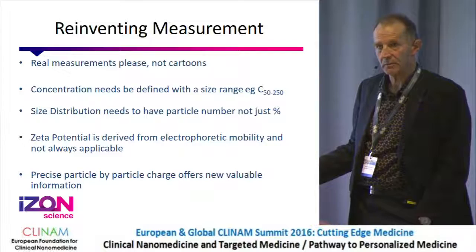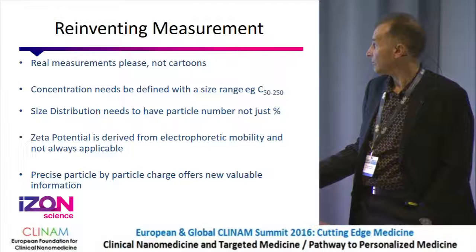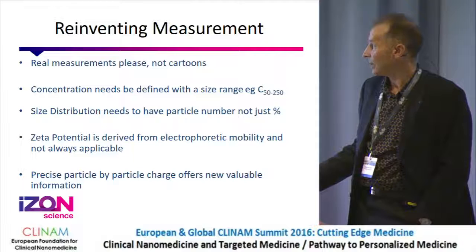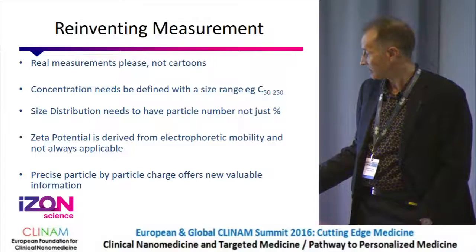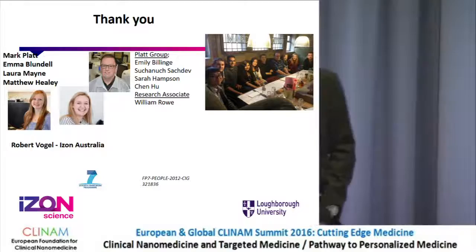So that's largely the talk. We're talking about reinventing nanomeasurement in particular. Real measurements, not cartoons. The concentration needs to have a size range. Size distribution should preferably have the particle number, not just the percentage. Zeta potential is derived from electrophoretic mobility, so it isn't always applicable. Precise particle charge measurement — 'lab on a particle' — offers a whole lot of value for new information. Thanks to all the people involved, including Dr. Robert Vogel from Eyes on Australia.